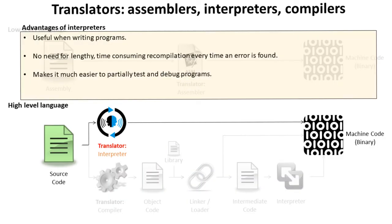Both interpreters and compilers have some advantages. Interpreters can be very useful when writing programs — there's no need for lengthy, time-consuming recompilation every time an error is found. It can make it much easier to partially test and debug programs. The program will run each line, translate it, and execute it until a bug is found.